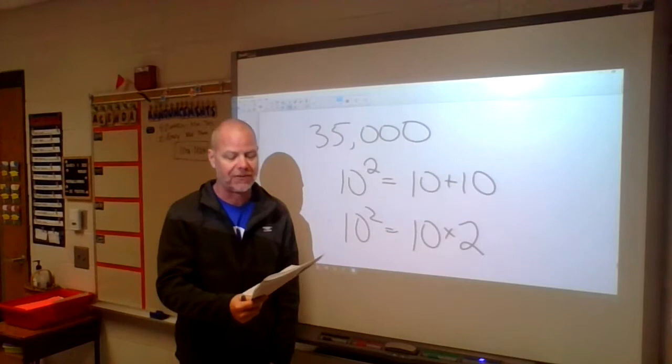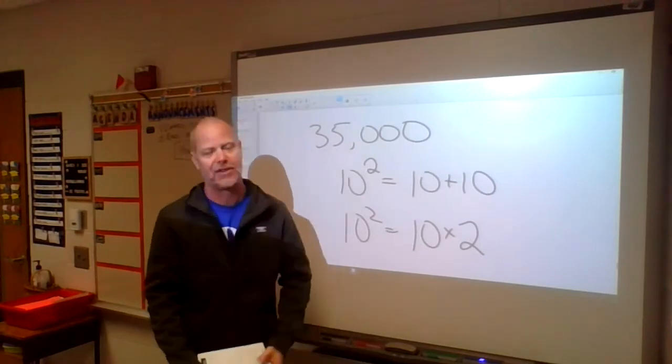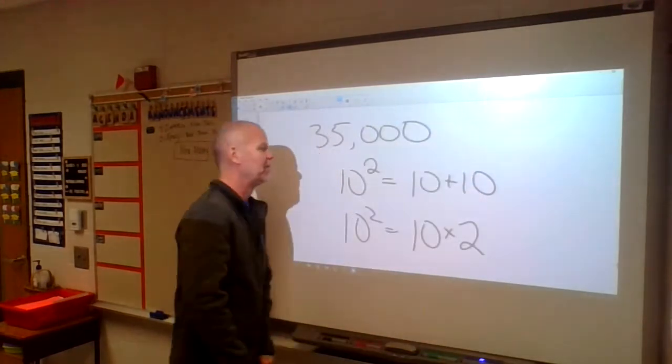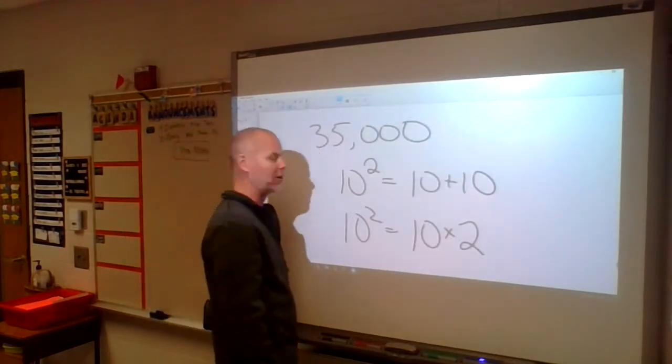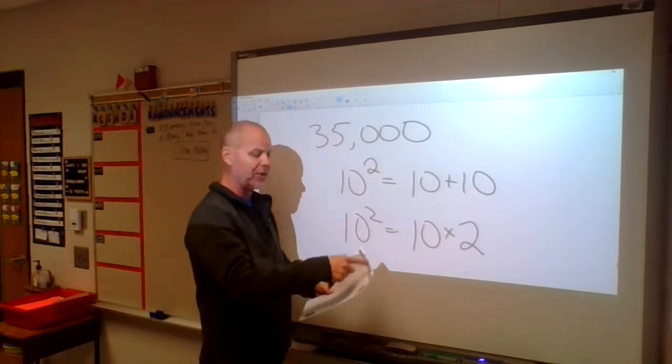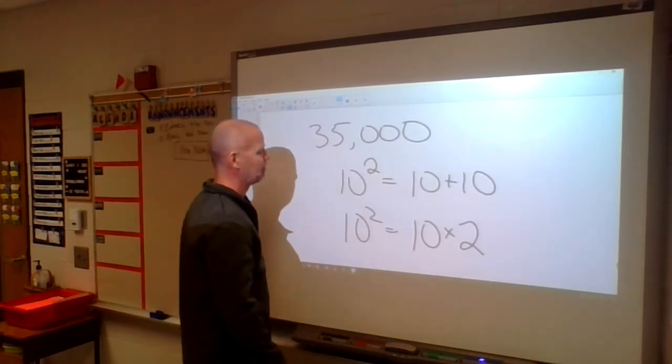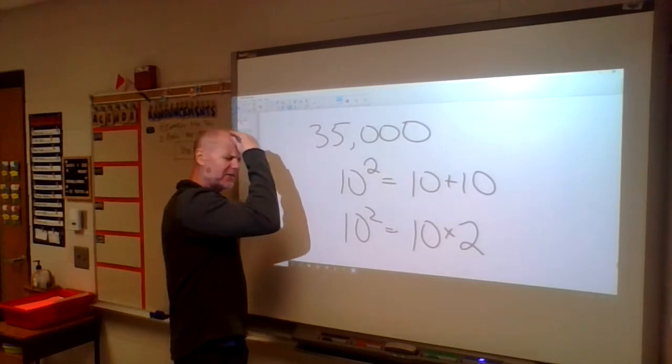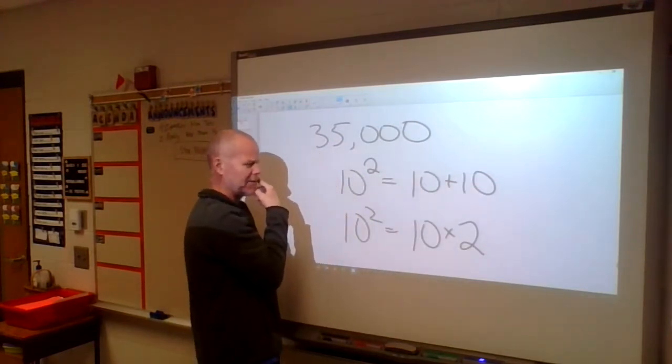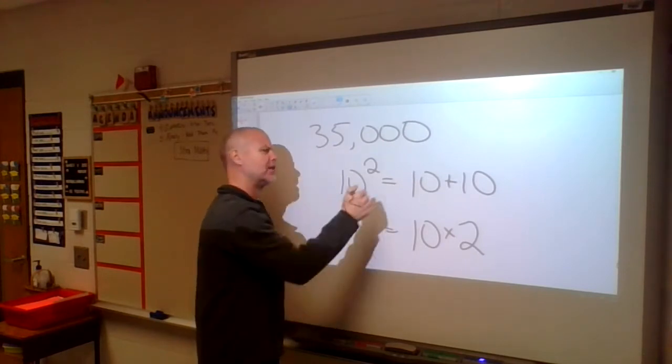Number 17. Which of the following expressions is equal to 35,000? Here's our number and it's got exponents. Yay! Okay, exponents. We need to remember what exponents are. Here I've written a couple of examples, 10 to the second power. These all deal with 10 to the power, some power. 10 to the second power, let's see.